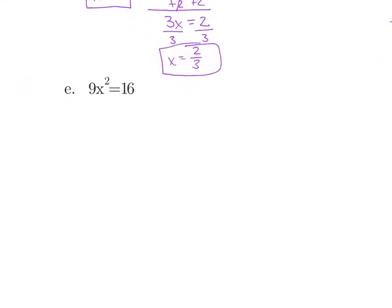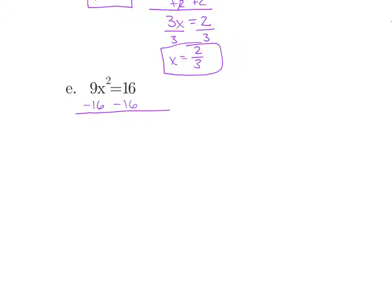For our last example, we have 9x squared equals 16. I want to move everything to one side, so I subtract 16 from both sides and get 9x squared minus 16 equals zero. Hopefully you're getting good at recognizing this — it's a difference of squares. So 9x squared factors to 3x and 3x, and 16 factors to 4 and 4, with different signs.